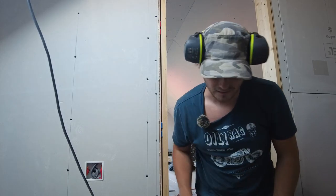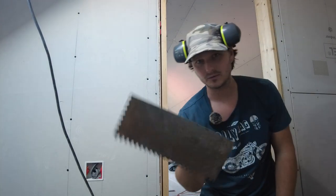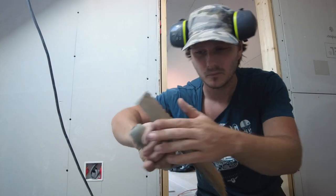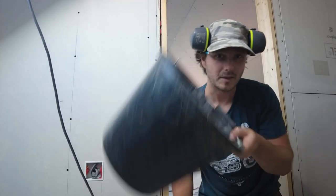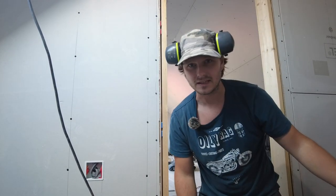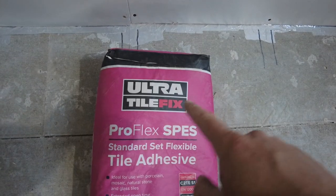First of all, we need to get a little bit of adhesive on the wall. So I've got one of my old trowels, you just need one with straight bits. Bucket trowel, bucket, some adhesive. I like to use Ultra for my tile adhesive.